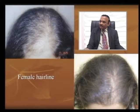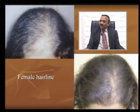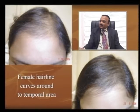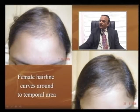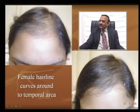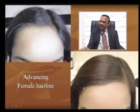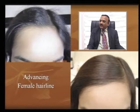A female hairline goes in a rounded curve, so there is no acute cut at the temporal angle. The entire curve on the front, from one edge to the other, is filled with new hair advancing — this is the female hairline.